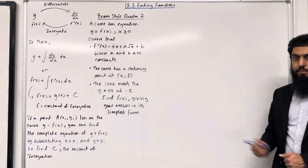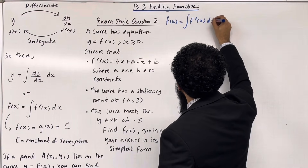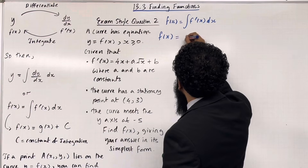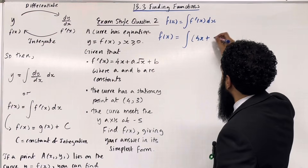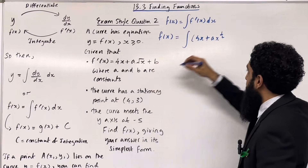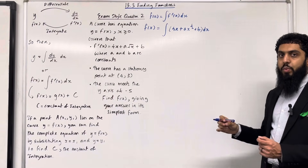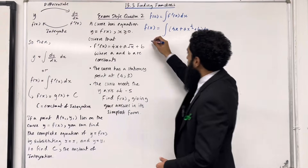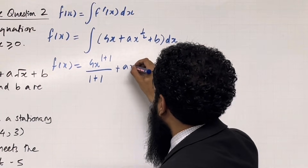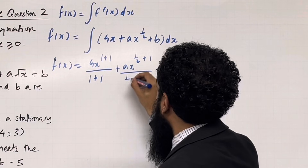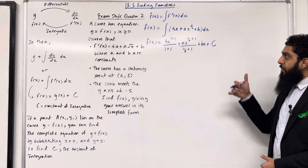f(x) is given by integrating f'(x) with respect to x. So we integrate 4x + ax^(1/2) + b with respect to x, carrying out term-by-term integration — add 1 to the power, divide by the new power. This gives f(x) = 4x^2 / 2 + ax^(3/2) / (3/2) + bx + c, the constant of integration.